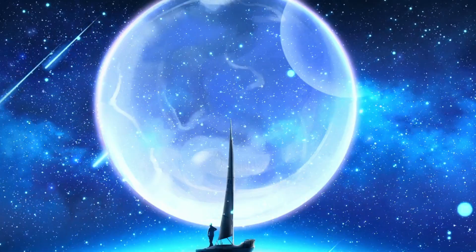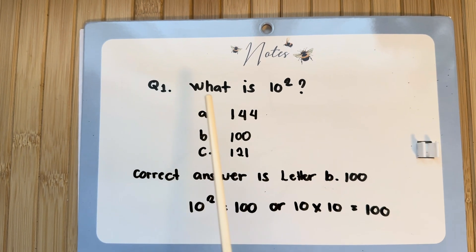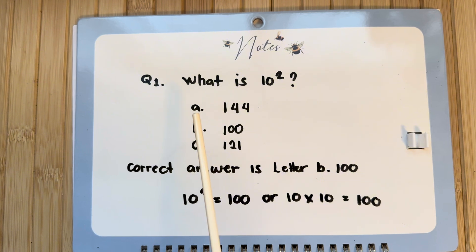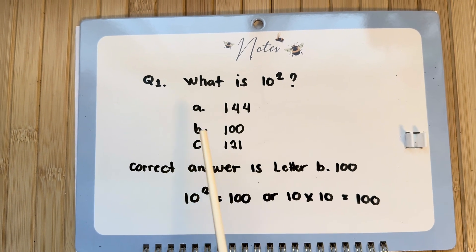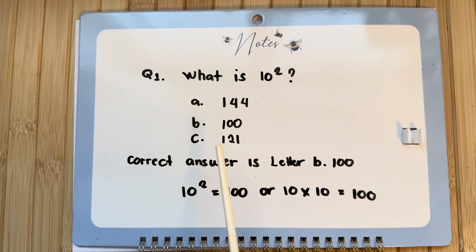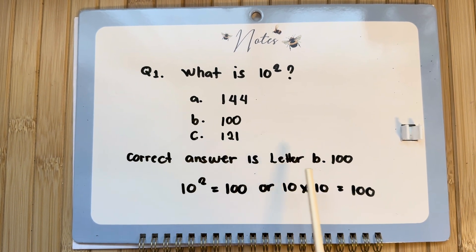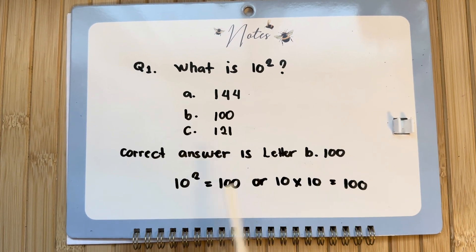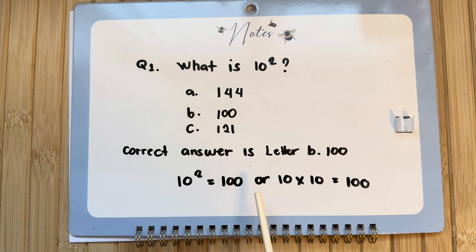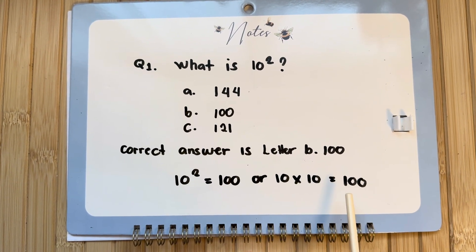Let's do a recap. Question number 1: What is 10 squared? Letter A, 144. B, 100. Or letter C, 121. The correct answer is letter B, 100. 10 squared is equals to 100, or 10 times 10 is equals to 100.